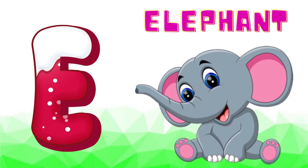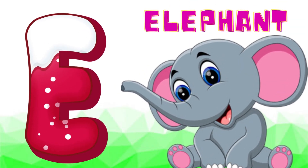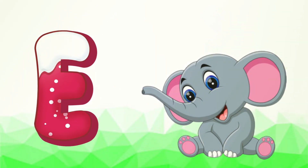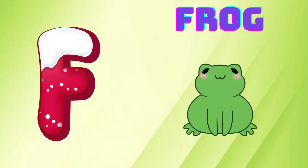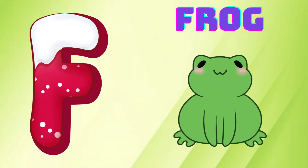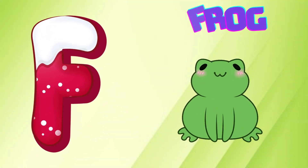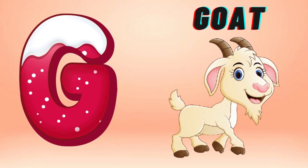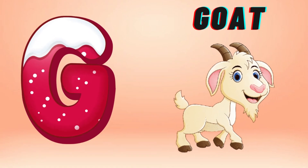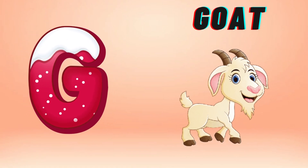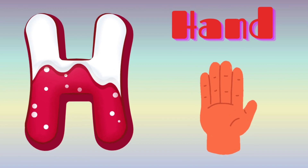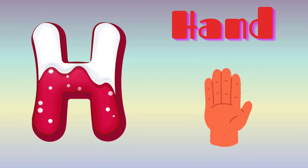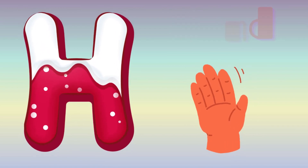E is for Elephant, E-E-Elephant. F is for Frog, F-F-Frog. G is for Goat, G-G-Goat. H is for Hand, H-H-Hand.